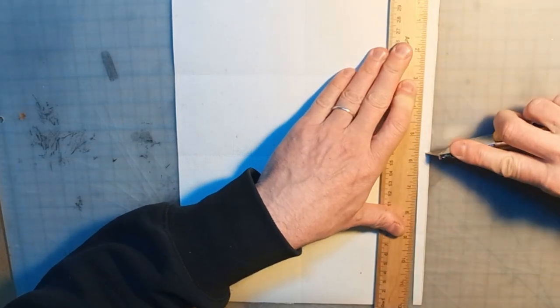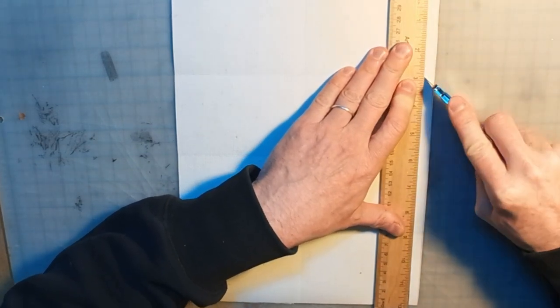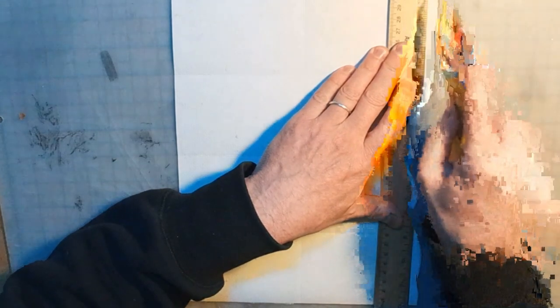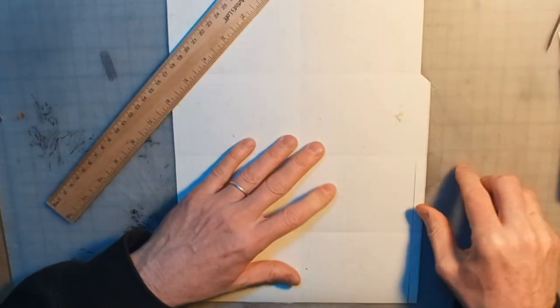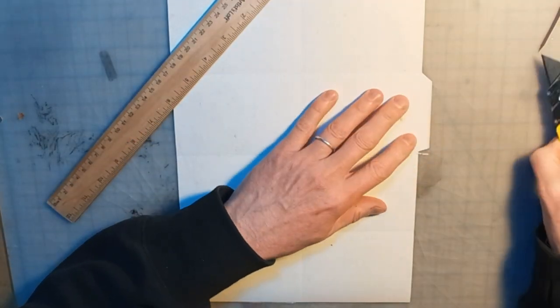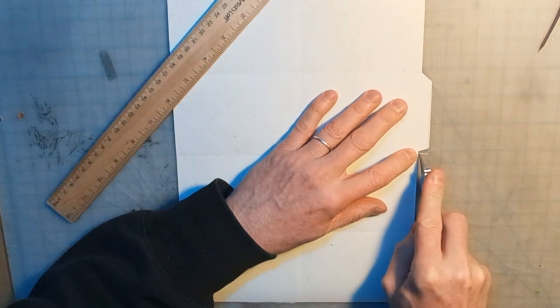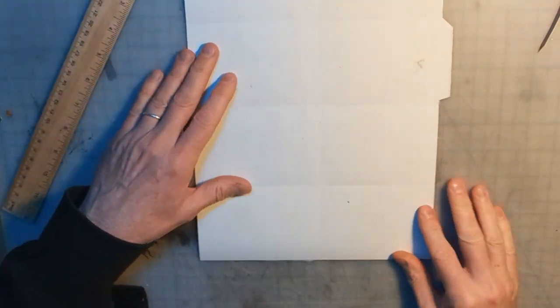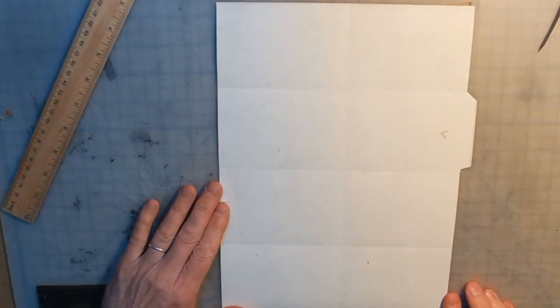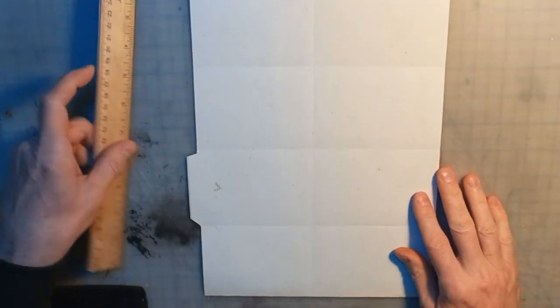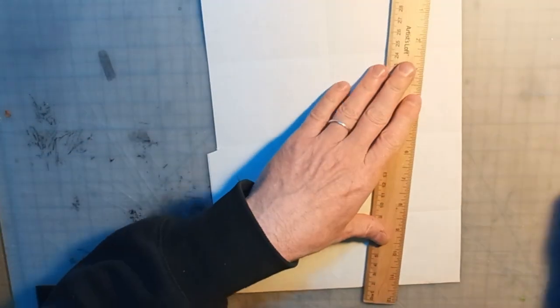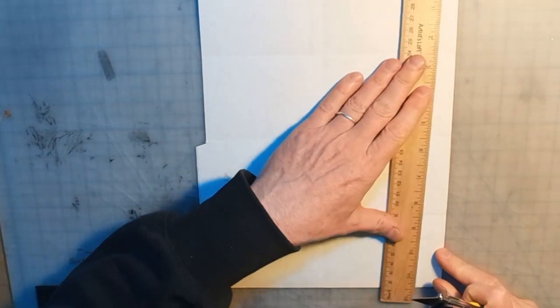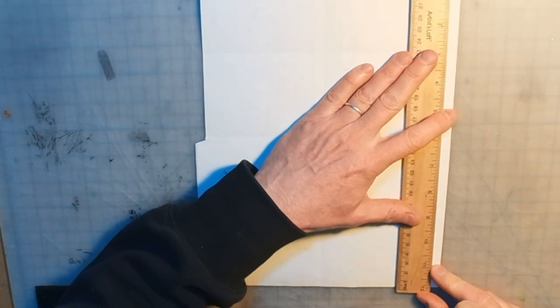I'm going to cut at a diagonal here and here so that we have like that. And we'll do that again on the other side. And remember to keep it in this middle of the fold.